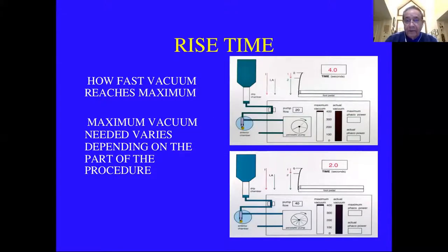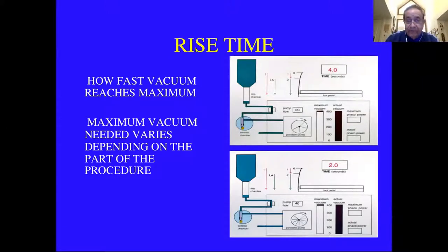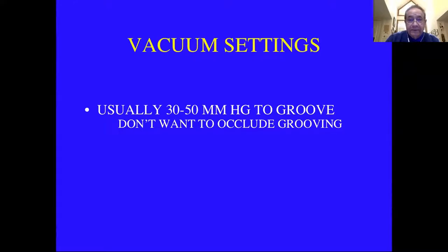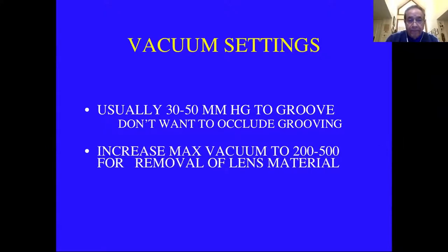Rise time is how fast the vacuum rises when you're in position two. If you're set at 20 milliliters per minute, it may take four seconds to get to your maximum. If you double the speed to 40 milliliters per minute, you should get to maximum vacuum in two seconds. You want to set it fast enough that material moves, but not so fast that it's jerky and you aspirate things you don't want, like the iris or the capsule. You have different vacuum settings and aspiration rates for different parts of the procedure. For a grooving procedure you usually only need 30 to 50 mmHg, but you have to increase it to 200 to 500 for removal of lens material.